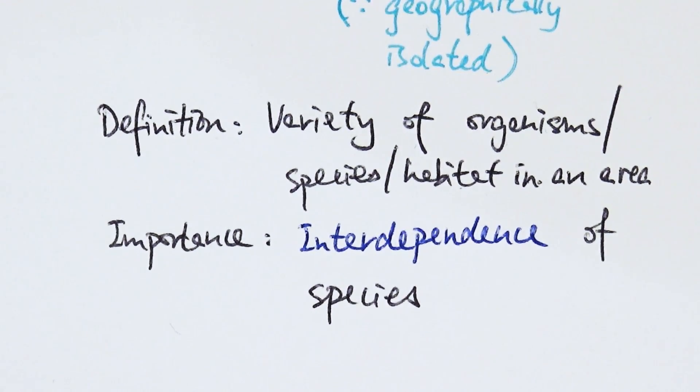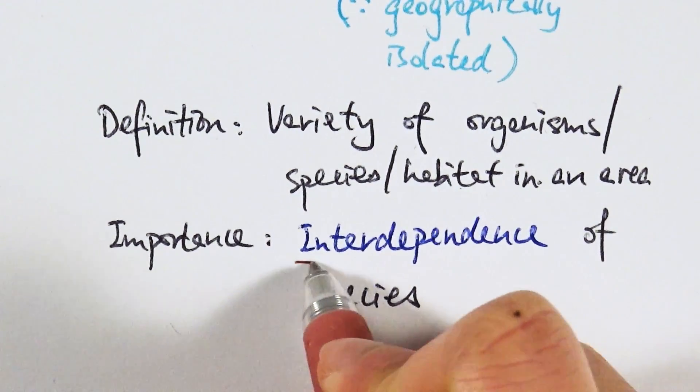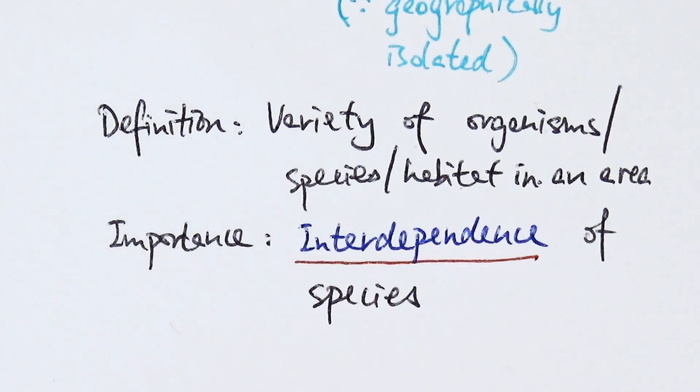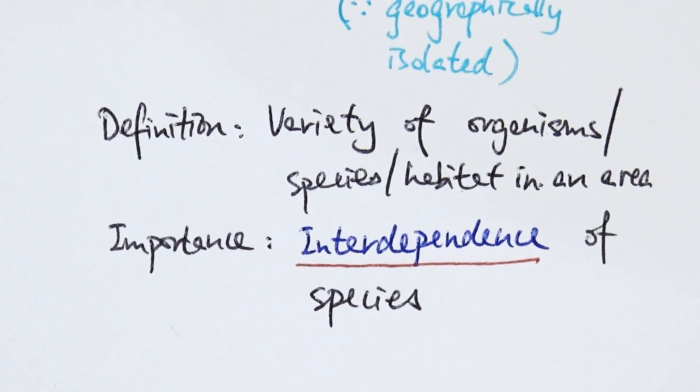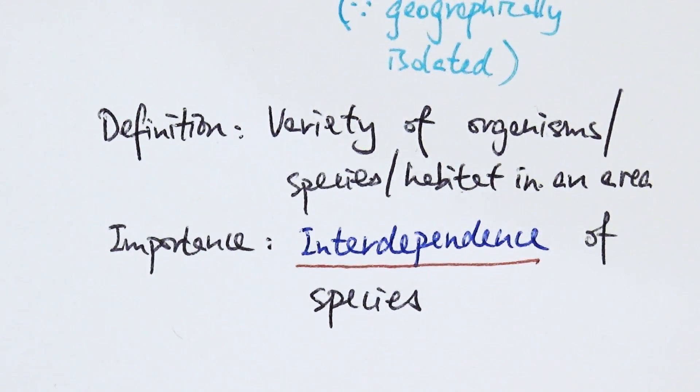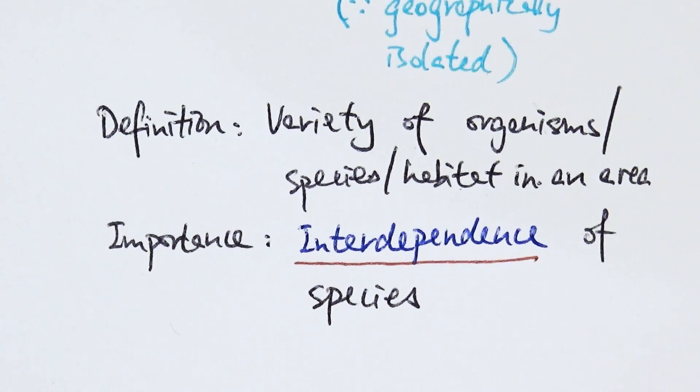It is important because it refers to the interdependence of species. If we look at a food web or food chain, species rely on each other to survive and reproduce. Changes to a particular part of a food chain would have a knock-on effect on the rest of the species. That's why it's important to maintain biodiversity, to ensure the survival of all species.